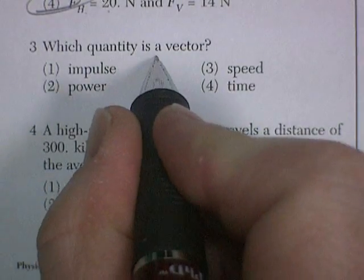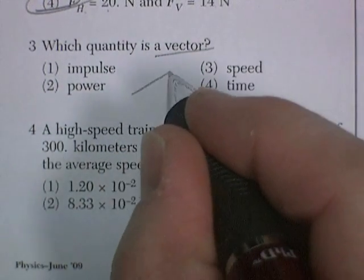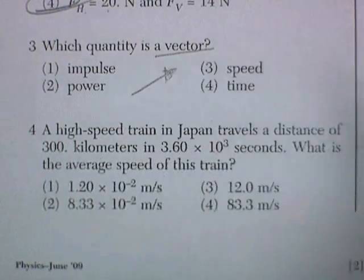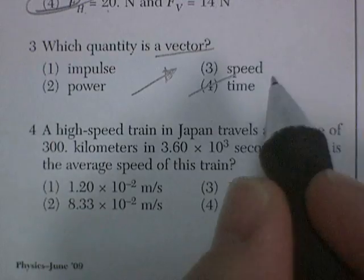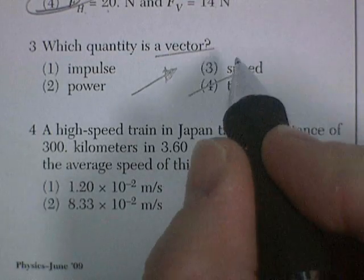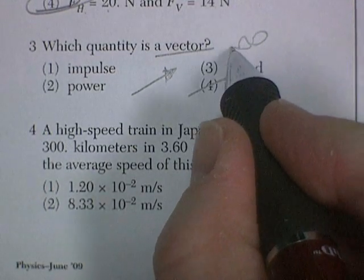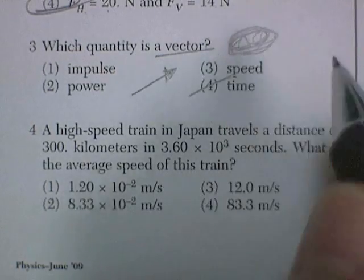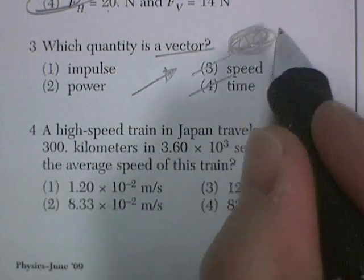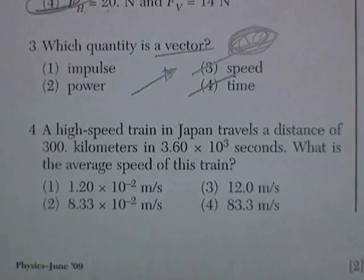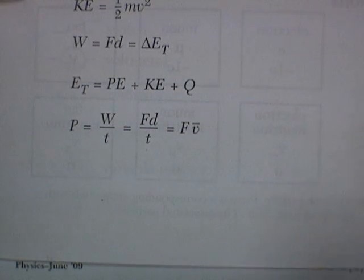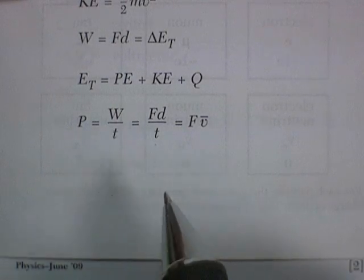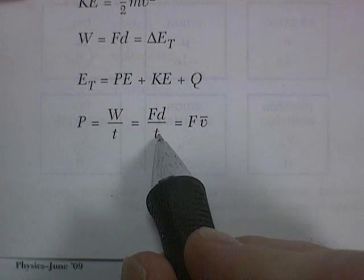Question three. Which is a vector? Which of these can be shown with an arrow? Well, it's not time. Time isn't shown with an arrow. Speed, that's distance over time, and so a car going in a circle has speed. It doesn't have velocity. Don't use an arrow for that. So power or impulse? Now, I guess you probably have to just know this one. Power is work over time, force times distance over time.